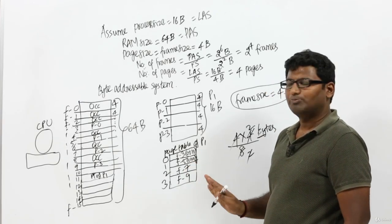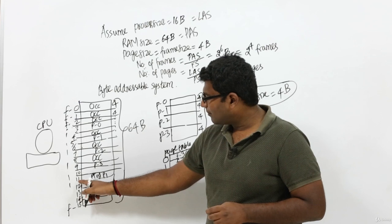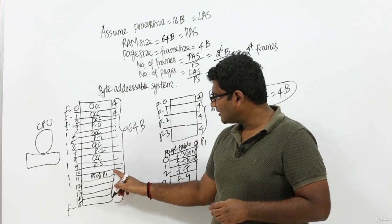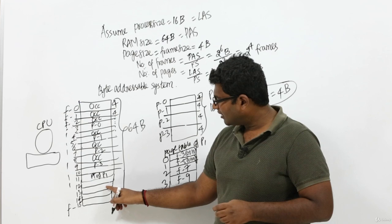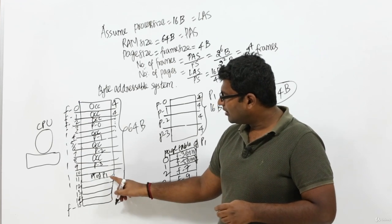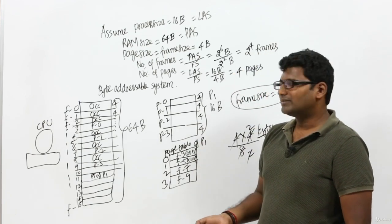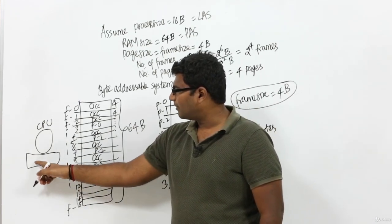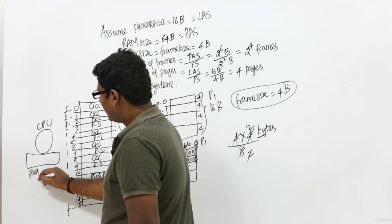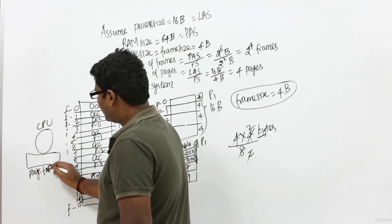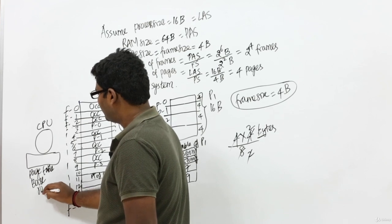Now let's see how the CPU will execute this process. This page table is loaded at exactly frame number 11. So there is some address at which this page table is loaded. Similarly, for every process there will be some page table, and all the page tables' addresses will be present in a fixed location. What the CPU will do is load the page table base address in a special register called the page table base register.